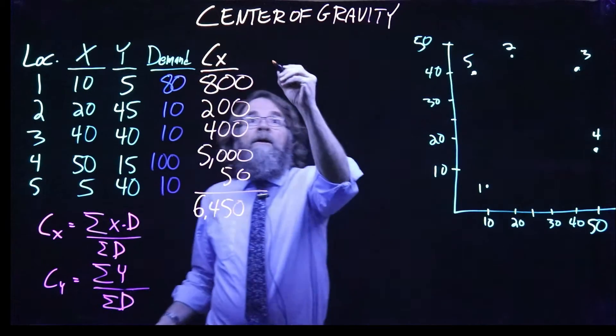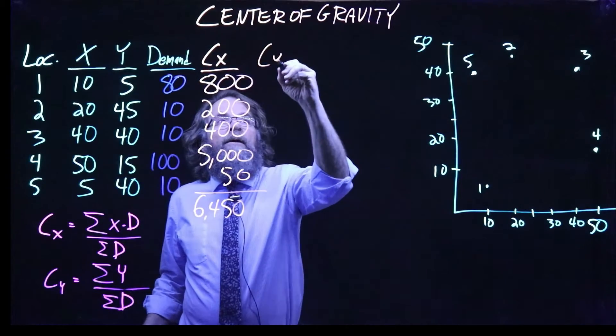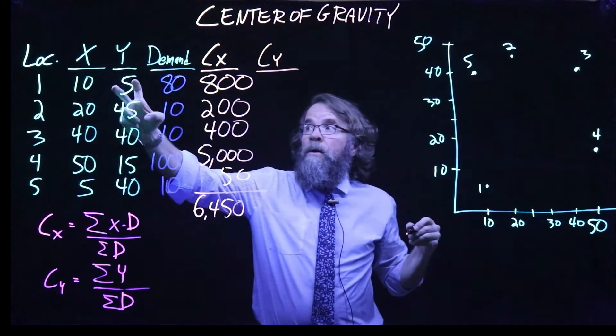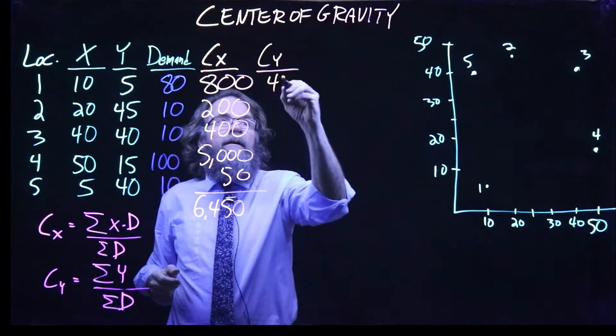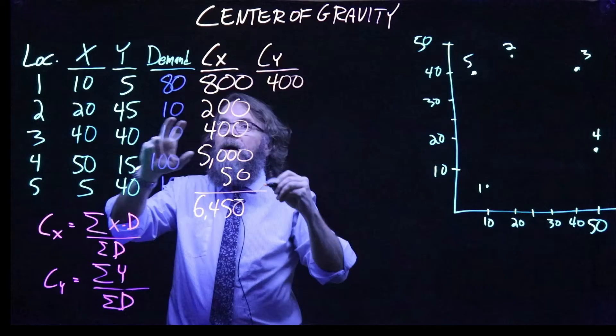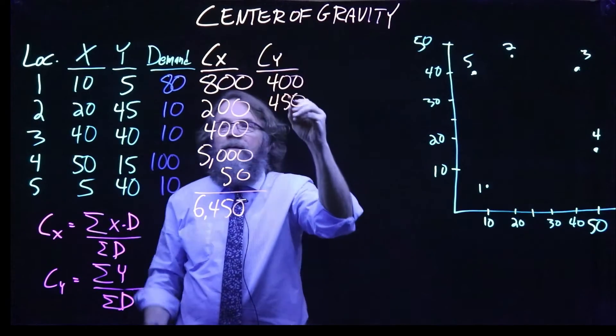Now let's do the same thing to get our Y coordinate calculation going. Again, in this case we take the Y coordinate, 5 times that same 80. In this case we get 400. 45 times 10 gives us 450.